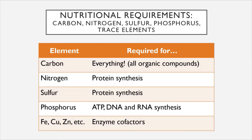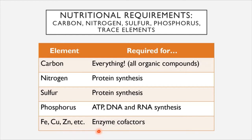The last growth requirement is the nutritional requirements of microbes. There is a suite of elements that microbes must have available to them in order to grow. Top of that list is carbon — the scaffold for all organic molecules, including carbohydrates, lipids, proteins, and nucleic acids like DNA and RNA. Also important is nitrogen, involved in protein synthesis, as is sulfur. Phosphorus is required for making ATP — which has phosphate groups — as well as DNA and RNA. Trace elements of different metallic ions, such as iron, copper, and zinc, serve as cofactors for enzymes.